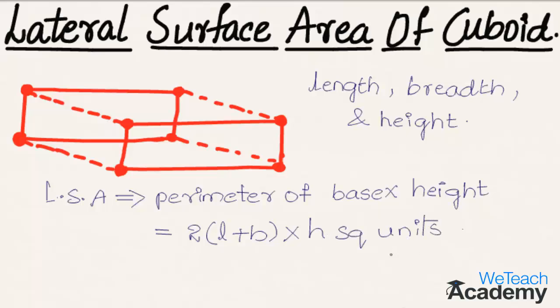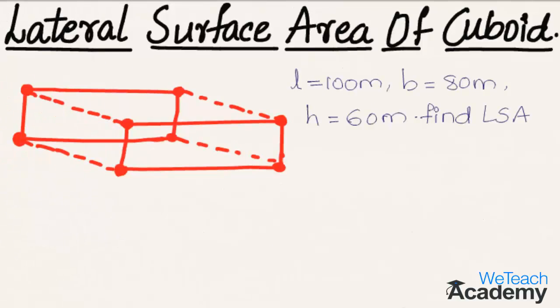Now let us proceed and discuss a few examples on this formula. The given example is: if length equals 100 meters, breadth equals 80 meters, and height equals 60 meters, then find the lateral surface area.